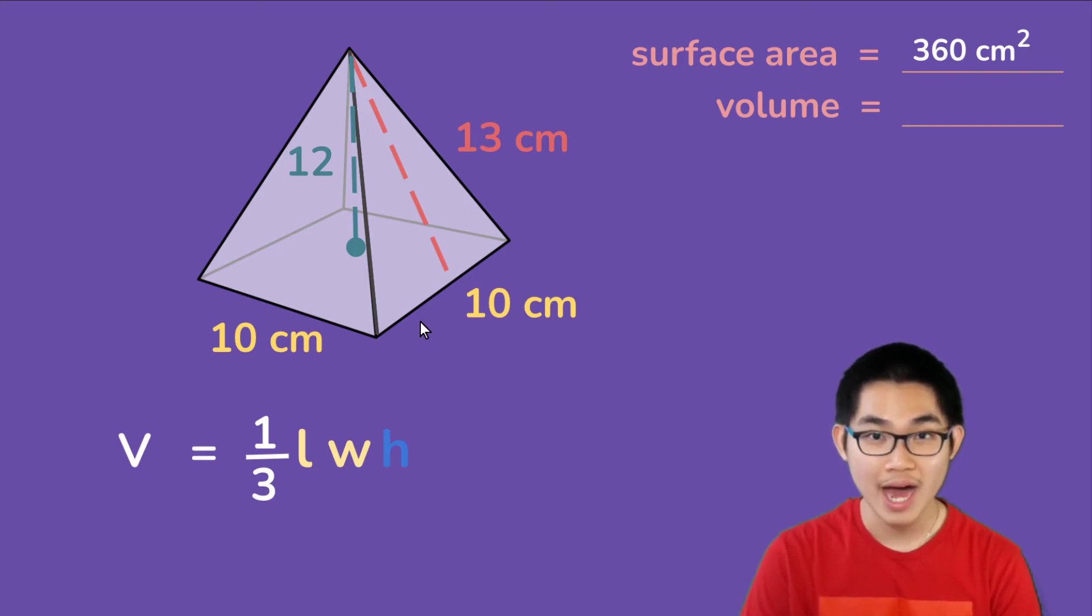And so that is why there is the number one over three in front. Now why is it one over three and not one over two or one over five? Well you need calculus to find this number and you won't learn it until you're in college. So for now the volume formula of the pyramid is one over three times the length, the width, and the height.